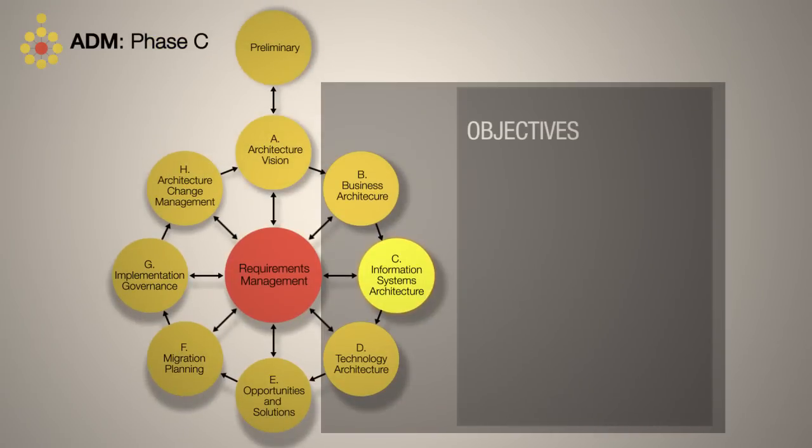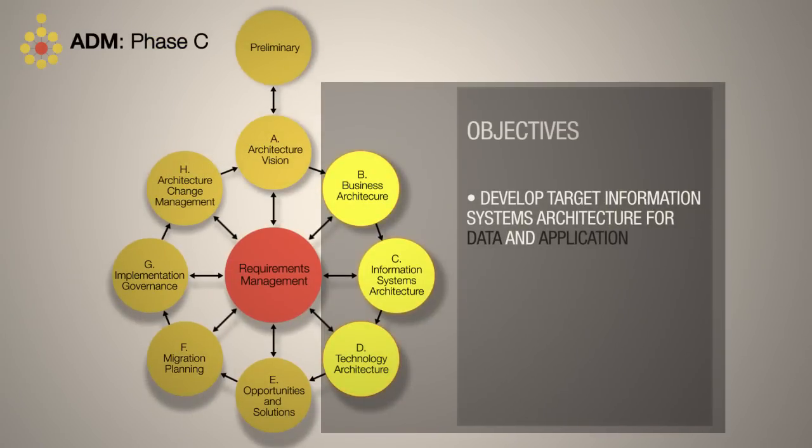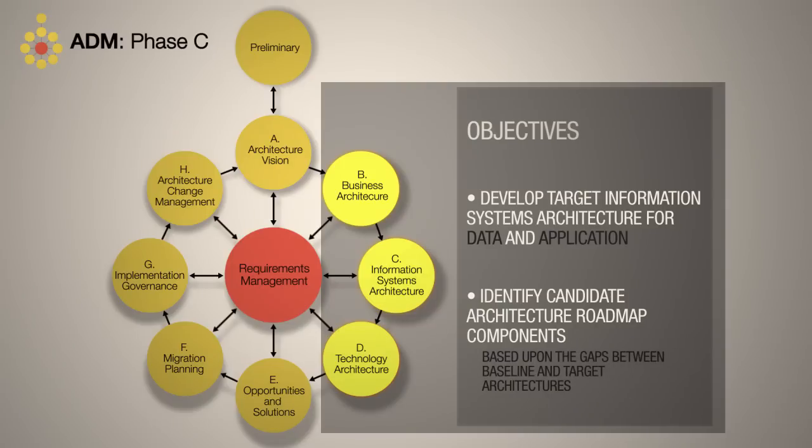As with the other architecture development phases B and D, the objectives are to develop the target information systems architecture for data and application and to identify candidate architecture roadmap components based on the gaps between baseline and target architectures.